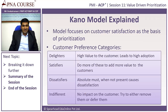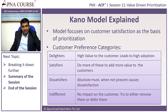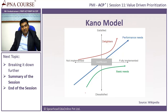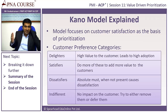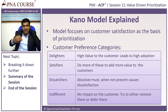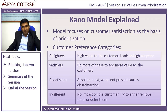Indifferent means no impact — you either do it or not, people don't really care, like a contact list. One important thing to note in the Kano model is that delighters don't stay as delighters forever. Over time they move to satisfiers, and if taken away they can become dissatisfiers. This is a moving window — new delighters will emerge. The Kano model is one of the best models, and it can be used in combination with MoSCoW to say, hey, this delight should be a must-have.